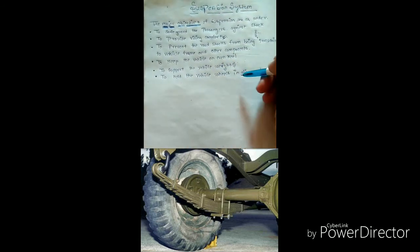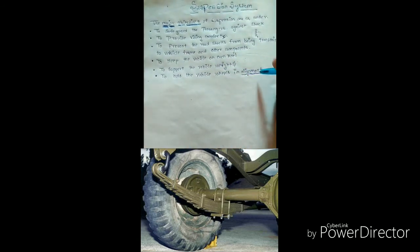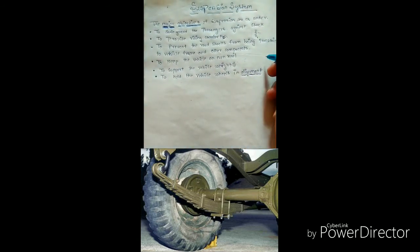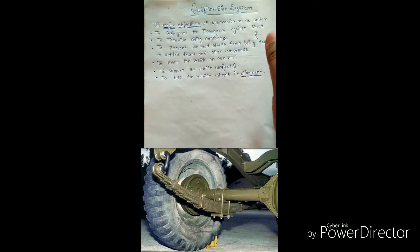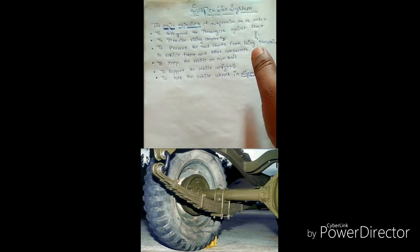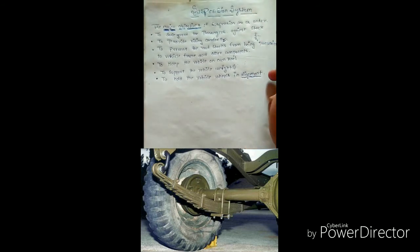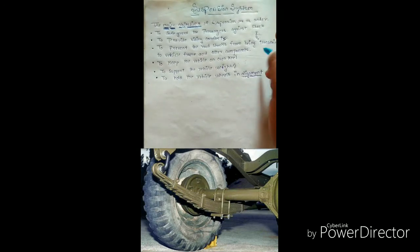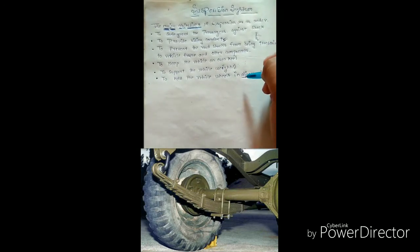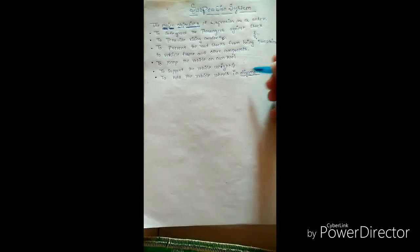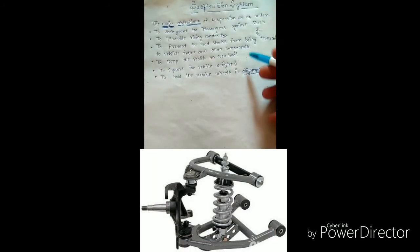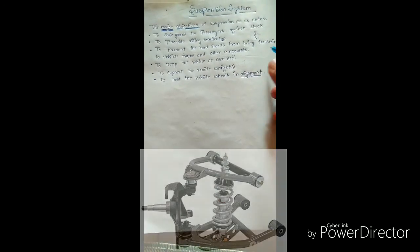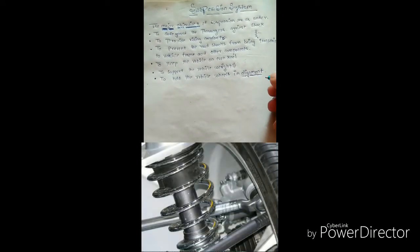Another objective is to hold the vehicle in alignment — it means it aligns the vehicle in a proper alignment. If there is no suspension, then the vehicle will not be properly aligned.